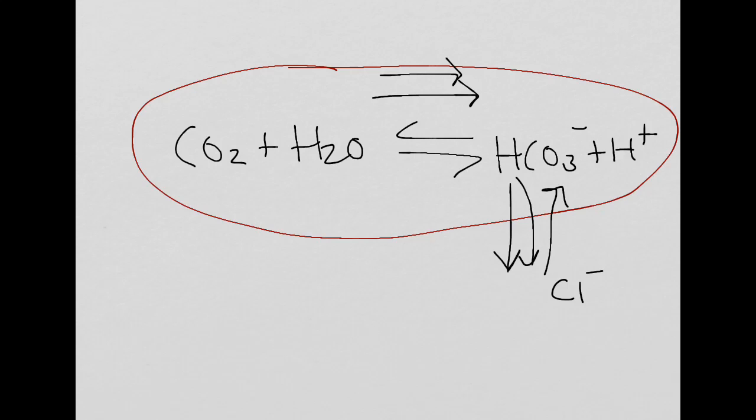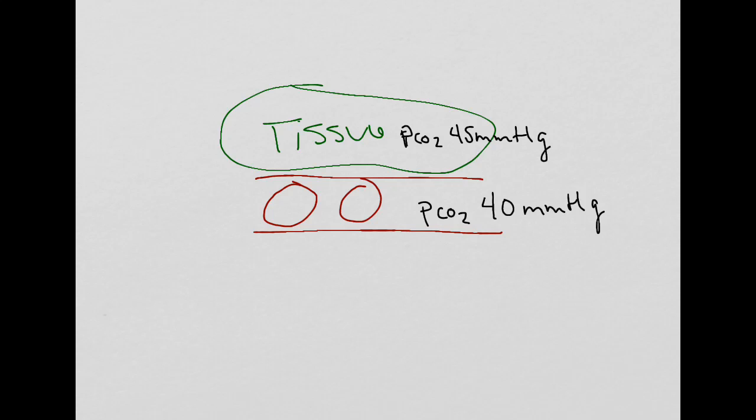So as bicarb drops, we can make more bicarb. If this did not happen, if the chloride shift went away and bicarb just kept building up, then eventually we would stop being able to convert CO2 into bicarb. We wouldn't be able to transport it in the blood, and now that CO2 would build up here in the tissue. So that's why the chloride shift is important, because we've got to get bicarb out of that red blood cell in order to continue to convert CO2 into bicarb.